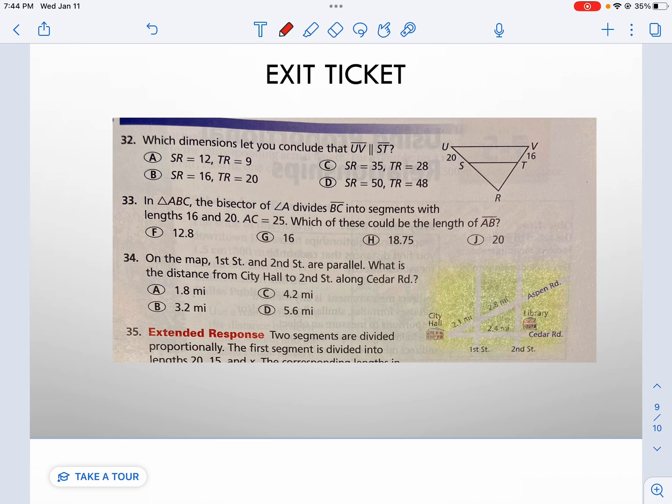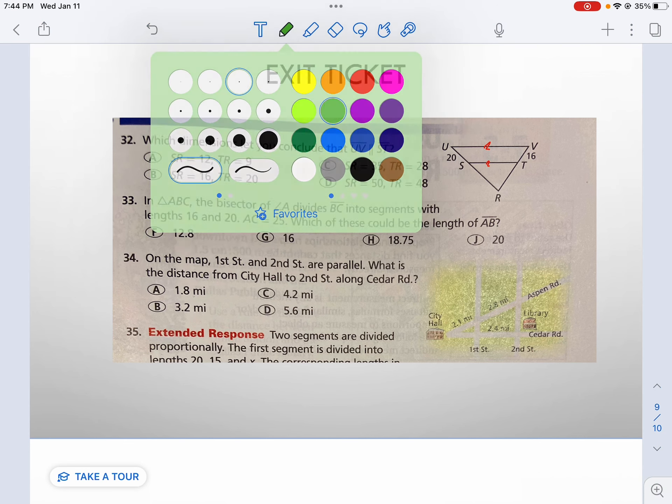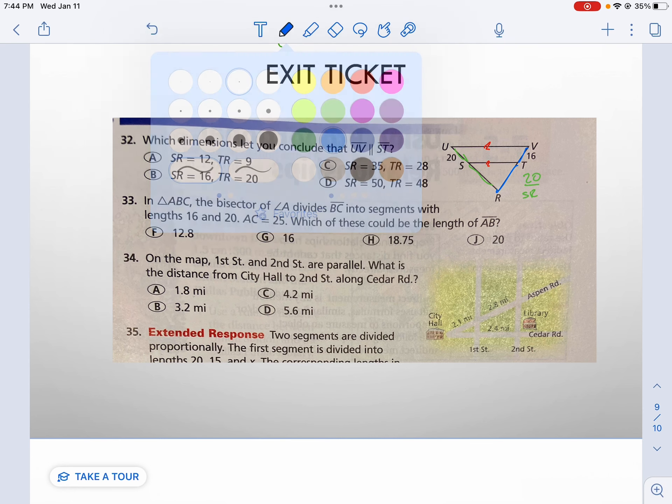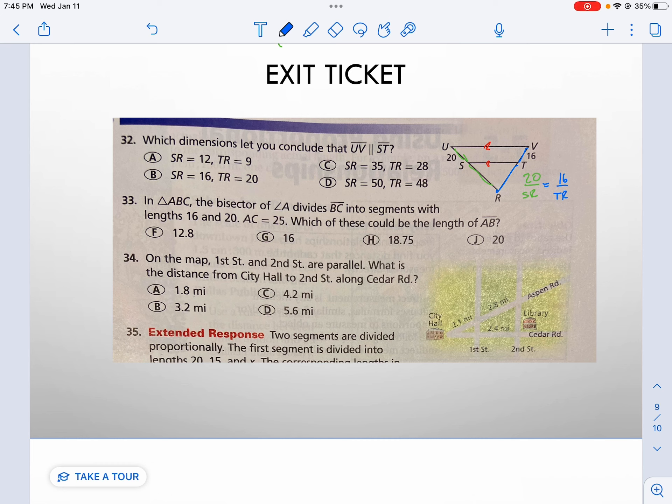Let's check. To show that these are parallel, I know that these sides US and SR should be proportional with VT and TR. So 20 over SR should equal 16 over TR. Let's plug in those values and check them. You should be able to set that up and plug in SR and substitute in TR.